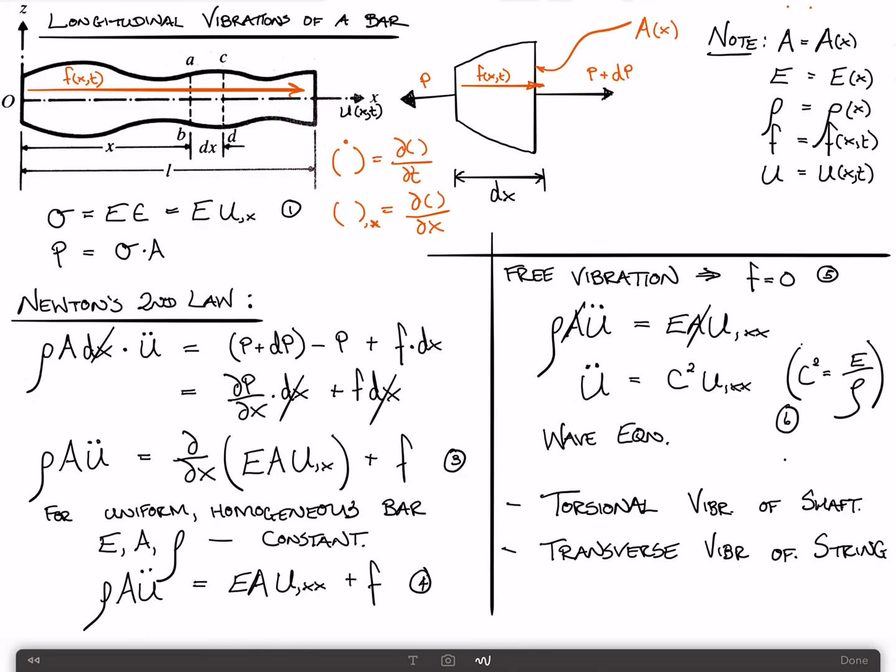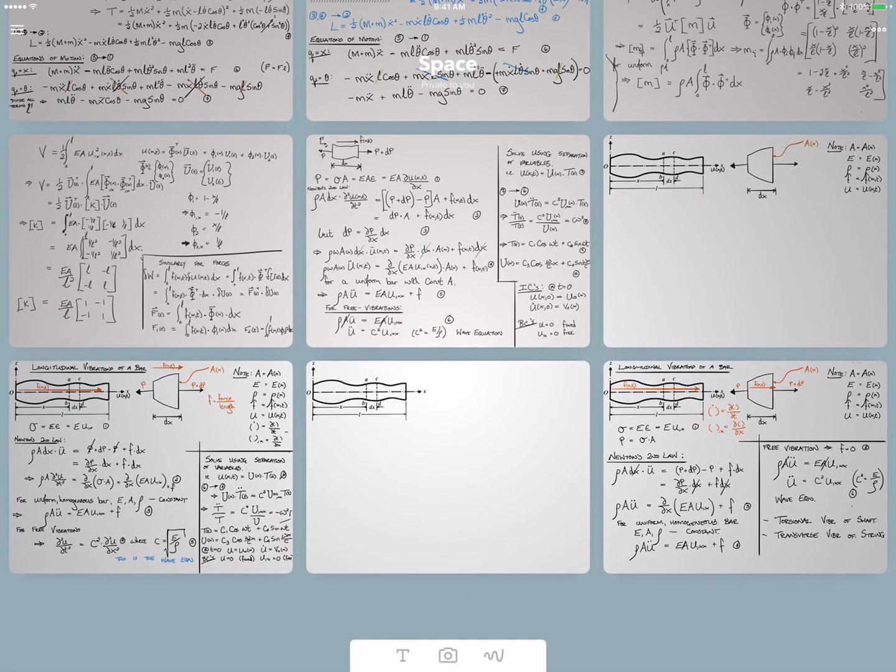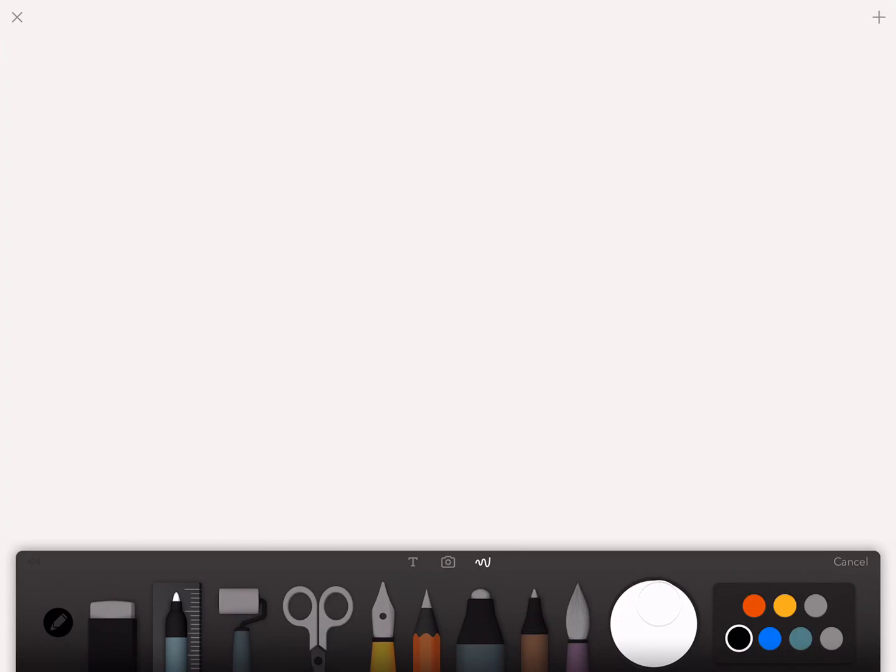Let me go a little bit further with this and show you how you would actually solve this. The equation says that u double dot is equal to c squared times u comma xx. We solve this using a method called separation of variables, which says that the time-dependent part and the space-dependent part can be separated.